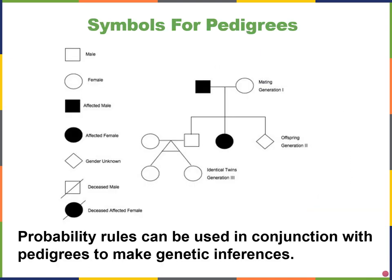So what are pedigrees? A pedigree, like the one shown here, is a chart that shows the inheritance of a trait or health condition through different generations of a family. The pedigree can show you the relationships among family members and tells you which individuals have a certain trait of interest.